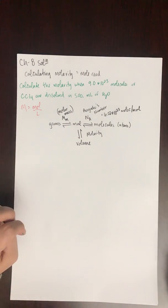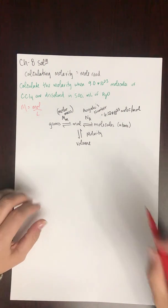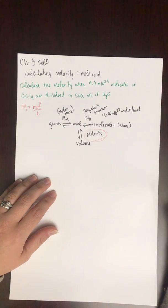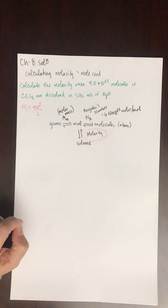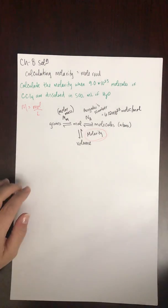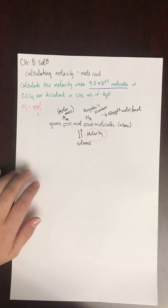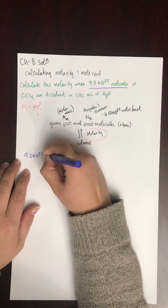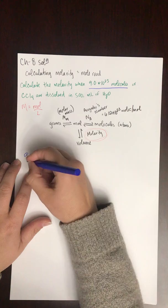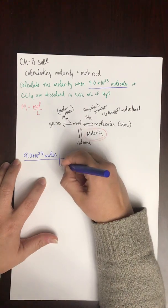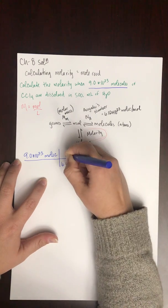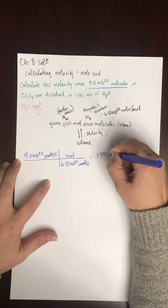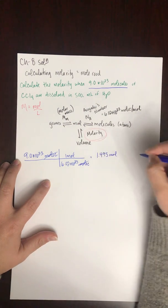In this problem we're converting molecules to moles, then using the volume to solve for molarity. Starting with 9.0 times 10 to the 23rd molecules, and Avogadro's number is 6.02 times 10 to the 23rd molecules per one mole — molecules cancel, giving about 1.495 moles of carbon tetrachloride.